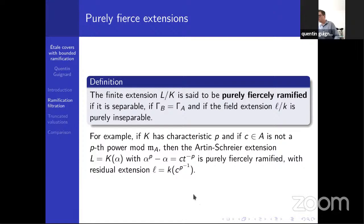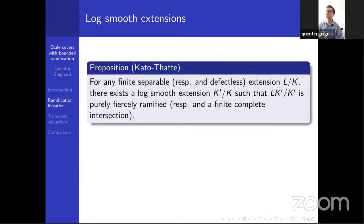Perhaps the simplest example of such extension is as follows. We take a base field of characteristic P, and we take an Artin-Schreier extension given by C, where C^P - C equals T (T is the uniformizer, for example). And I take C to be a unit which is not a P-th power in the residual field. As it turns out, this Artin-Schreier extension is purely fiercely ramified in this sense. The residual extension is simply given by extracting a P-th root of C.